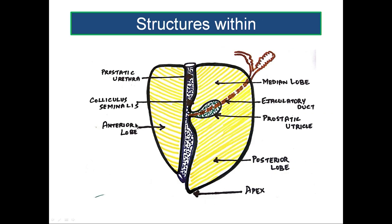Now let us look at the structures within the prostate gland. Three structures are present or pass through the prostate gland. The most important one is the urethra — the prostatic urethra. The proximal portion is called the pre-prostatic urethra and the remaining is called the prostatic urethra.